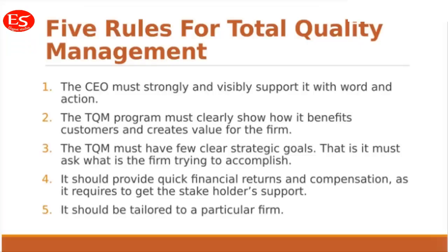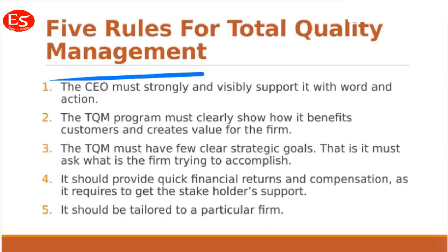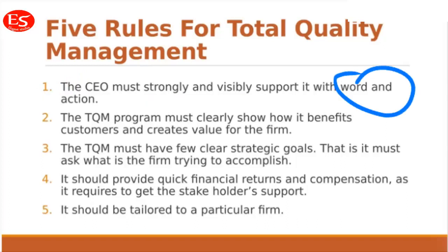There are five rules to follow for total quality management. The first rule is that the CEO must strongly and visibly support it in word and action. If the owner really wants to enhance quality through TQM, the chief executive officer must support it in both senses — in words and in action — as dedication from higher managing authorities is very much required.